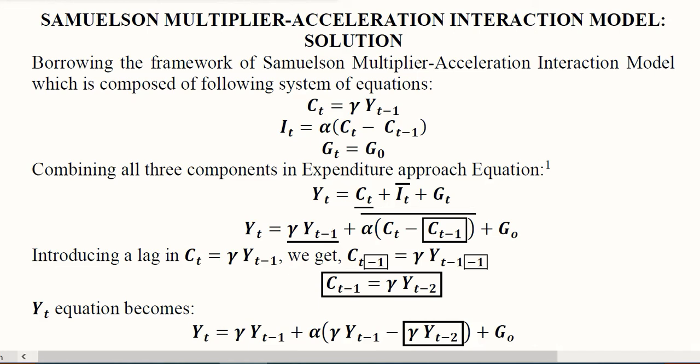In the last video we developed the framework of the Samuelson multiplier acceleration model, and now we will use this framework to solve it and get the solution of the national income explained by this interaction model.